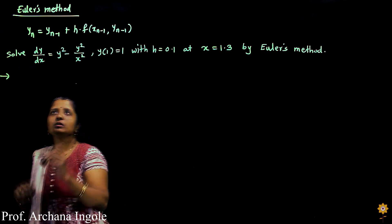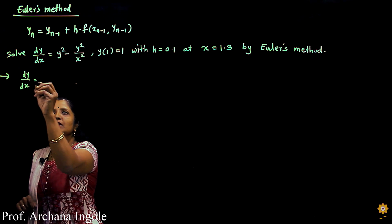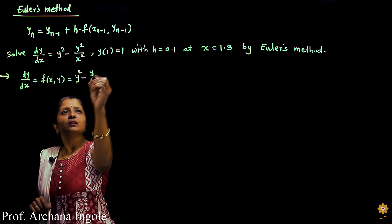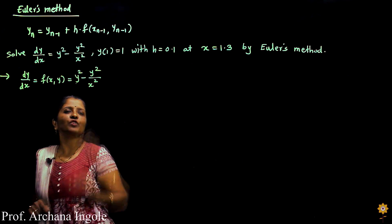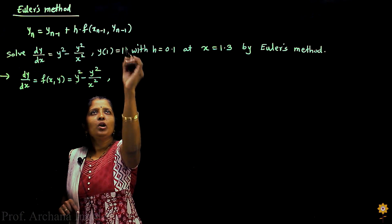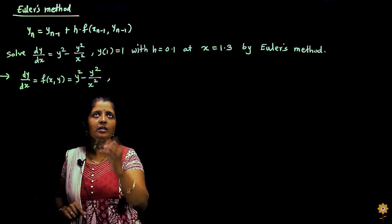Let us find out a solution. dy/dx, as we know, this we consider as f(x,y). So f(x,y) in this example is given as y² minus y²/x². Now let us understand the meaning of this symbol y(1) = 1. These are the initial conditions given.